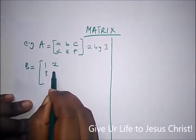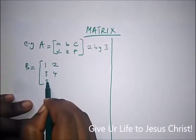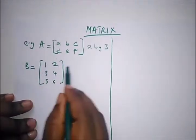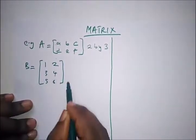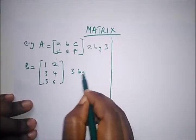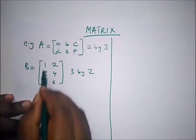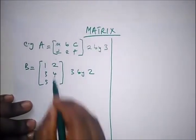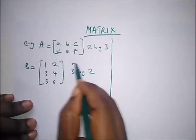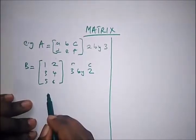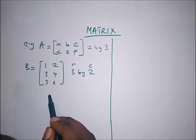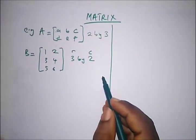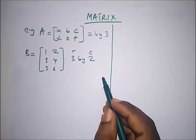Another example is this one: we have 1 2 3 4 5 6. Now this is a 3 by 2 matrix — that is, 3 rows and 2 columns. Now in matrices, we have two kinds of diagonals.